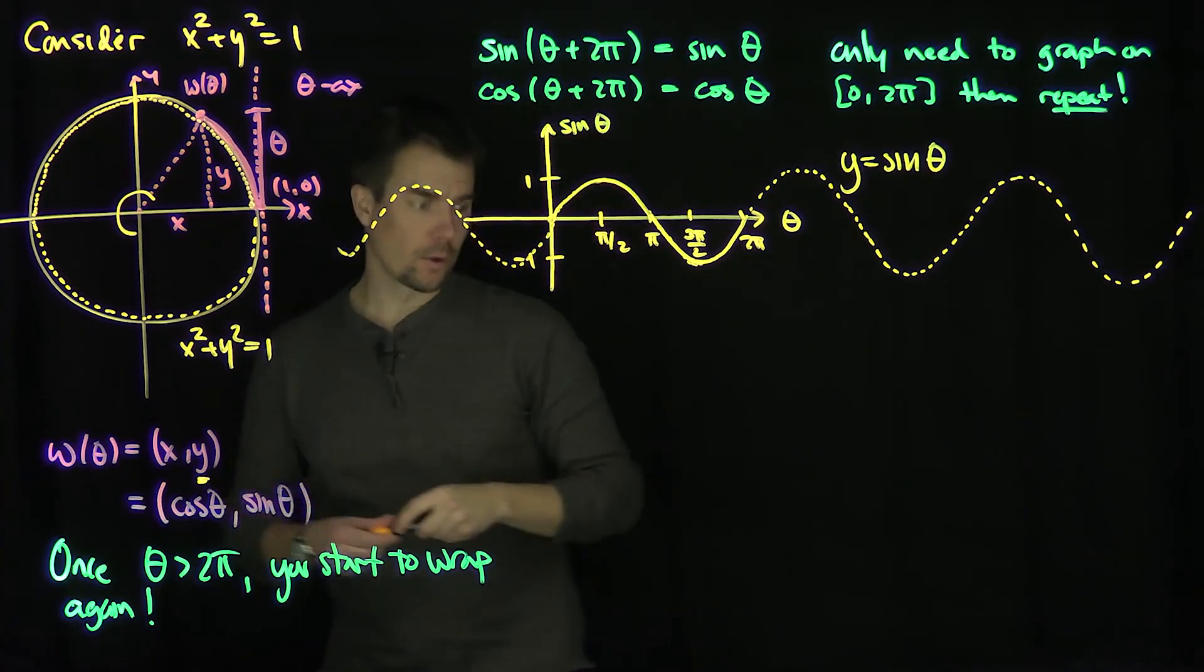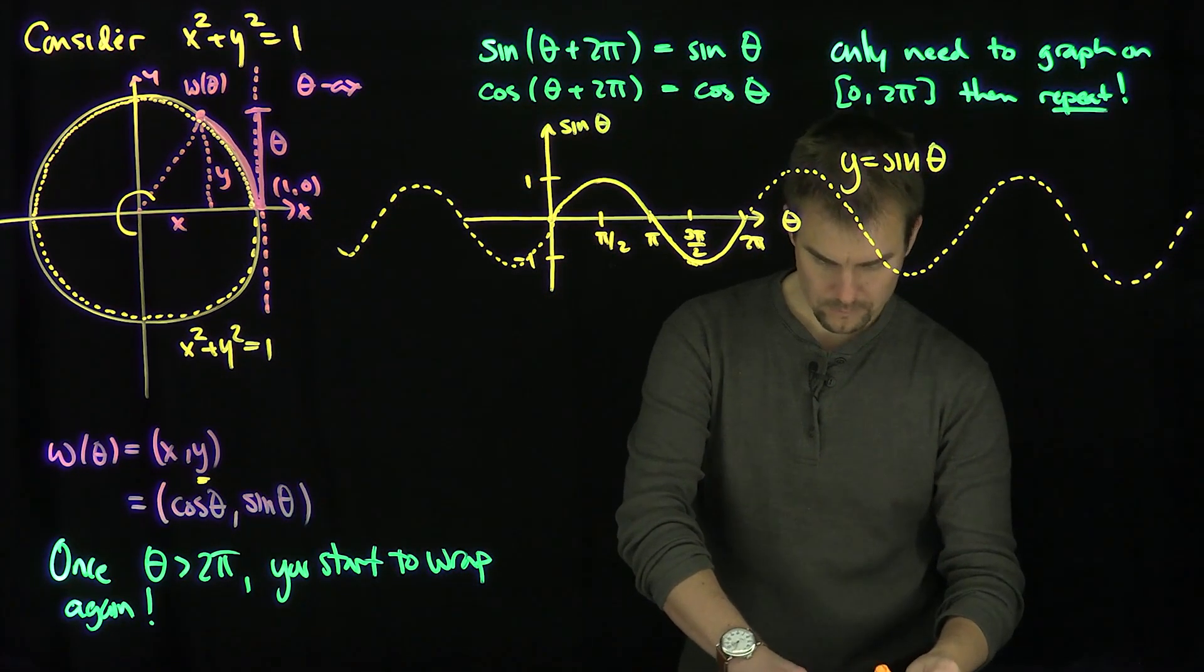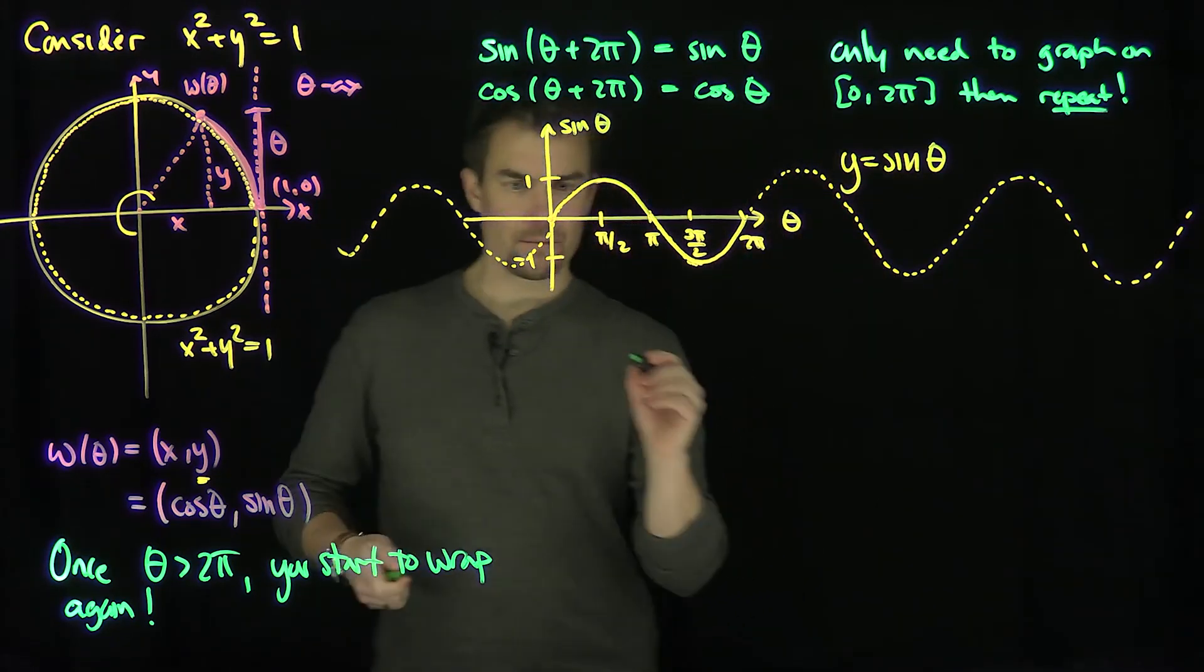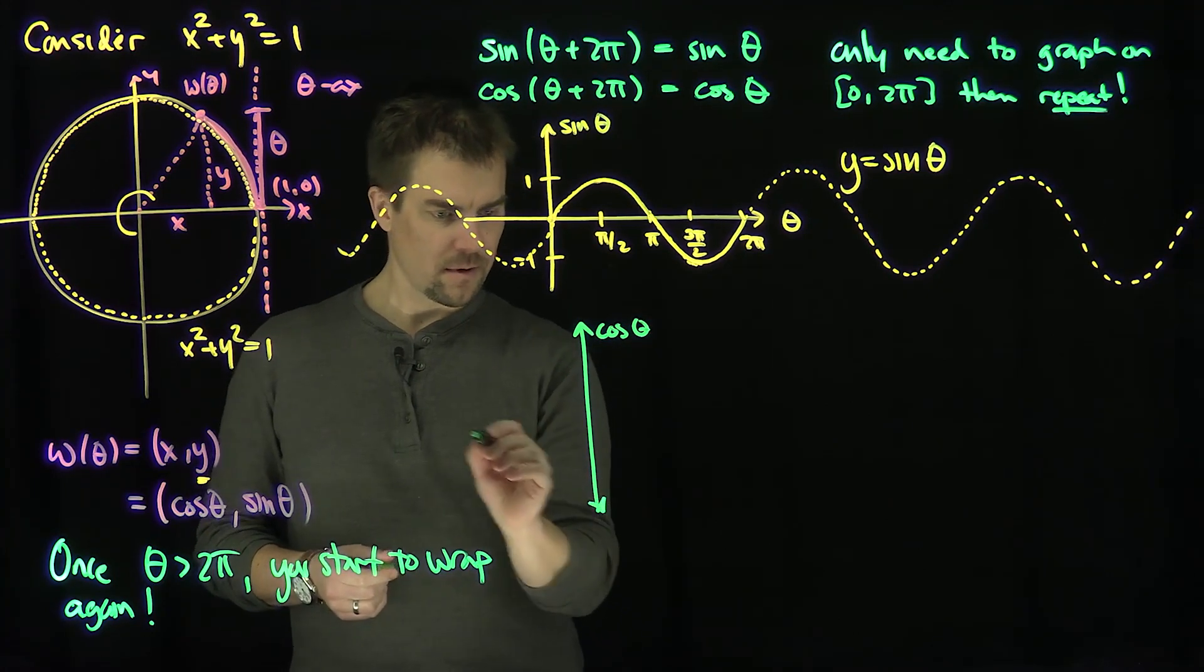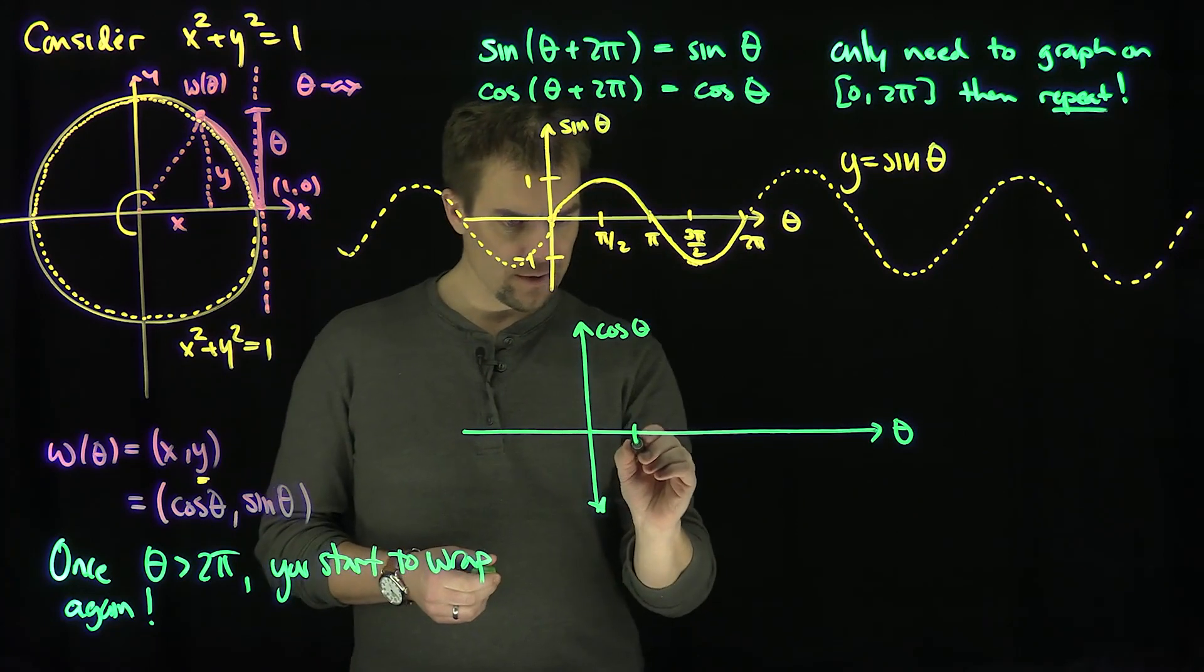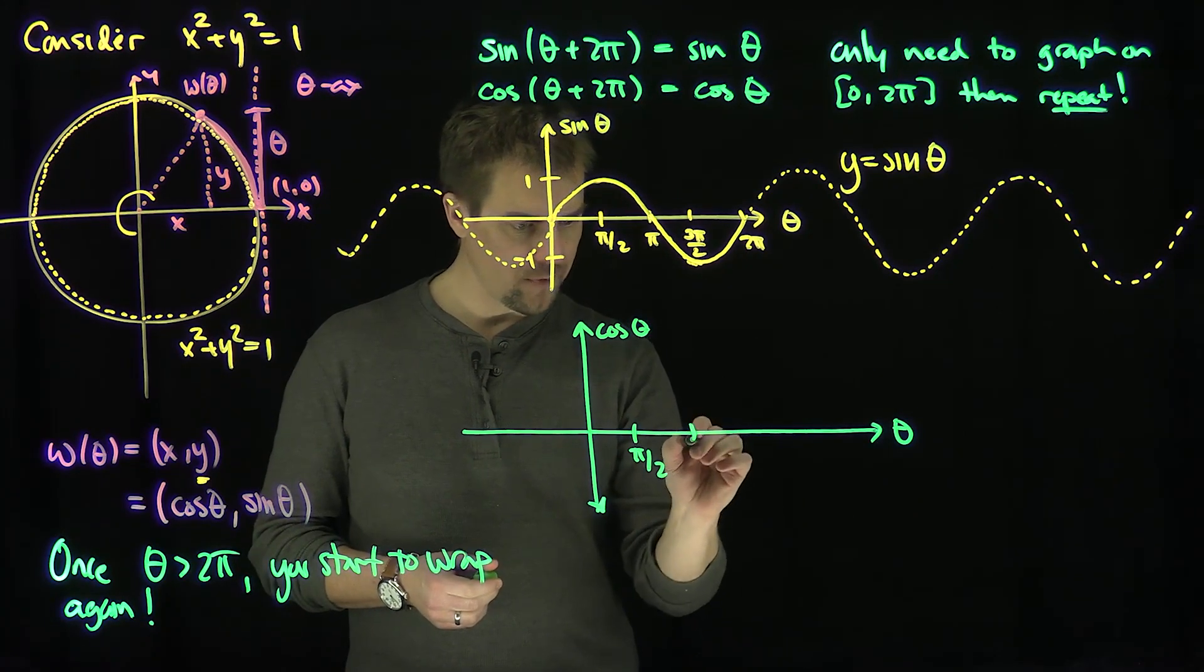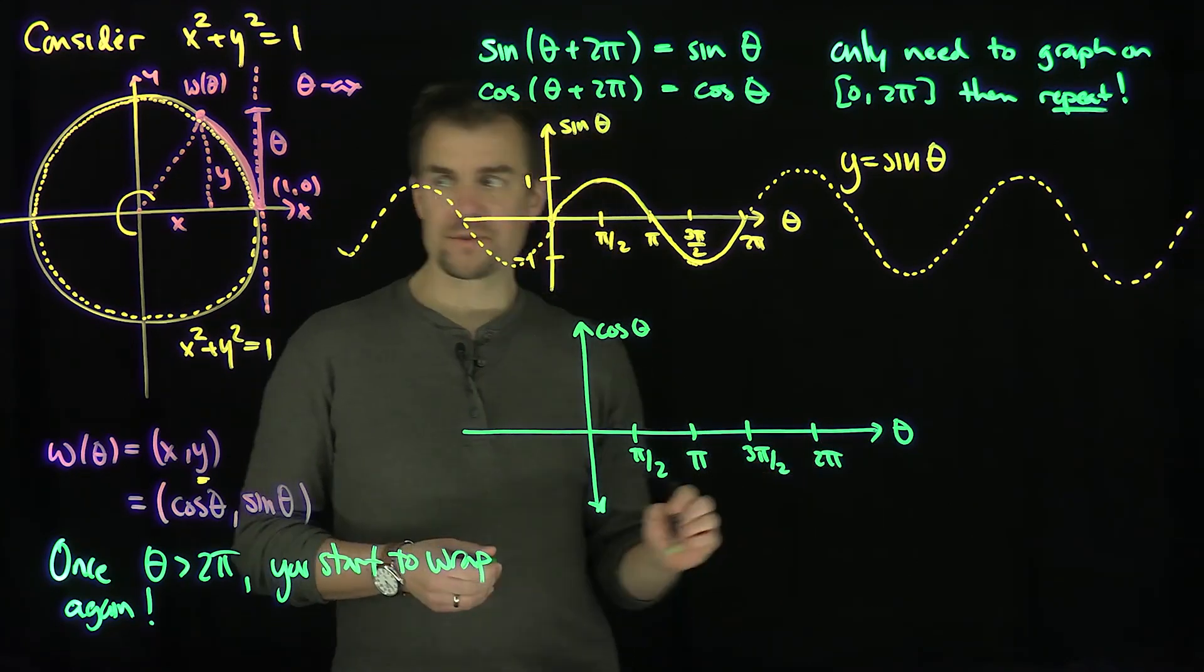Now let's try to draw the same thing for cosine. So what's the graph of cosine going to look like? So let's do it. So for cosine, we're going to do the same thing. There's the cosine of theta axis. And there's the theta axis. We're going to consider the same points. Pi over 2, pi, 3 pi over 2, and 2 pi. Let's see what happens.